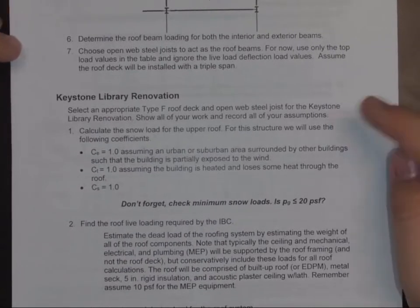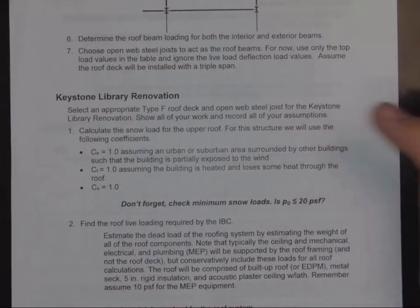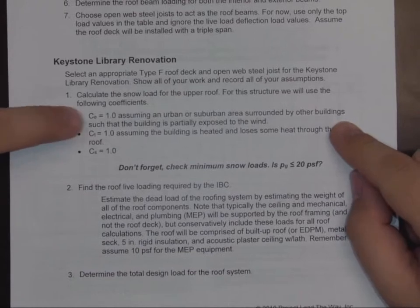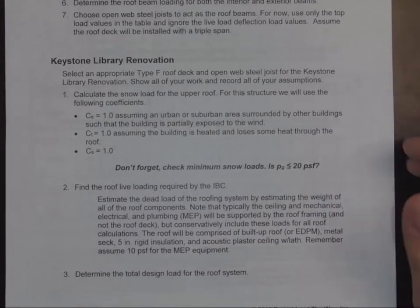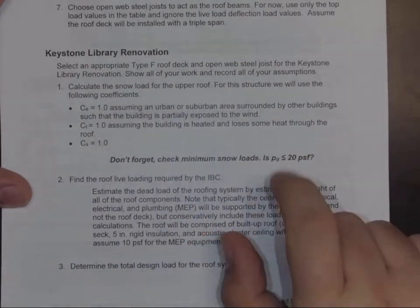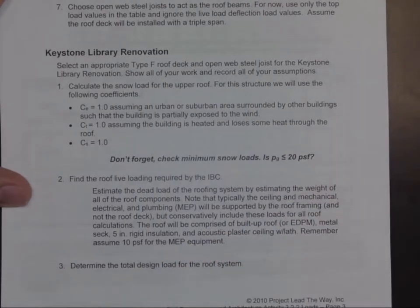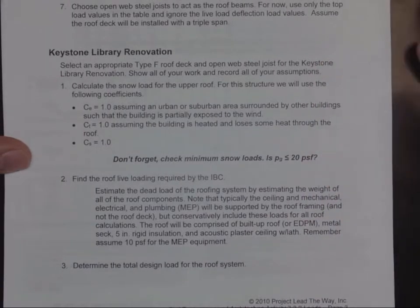You're going to have selecting an appropriate roof type deck to open steel web joists for the Keystone Library. First thing you're going to do is find the snow load. Very similar to what we did, you're going to go through and do the exact same thing, find that I factor. Don't forget to check the minimum snow loads—is that snow load greater than or equal to 20 PSF? If it is, you've got to do that second calculation we did in number one to account for large snow events. Given where Noblesville is at, you might need to check that.